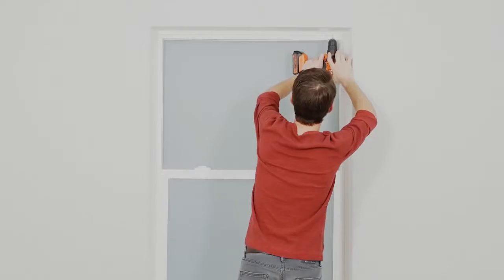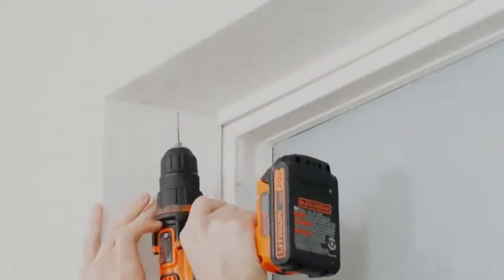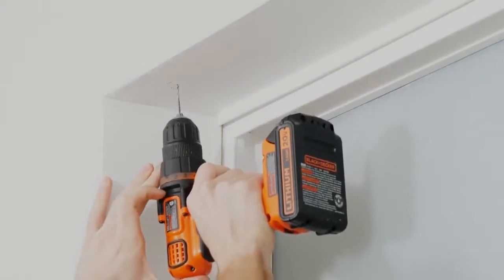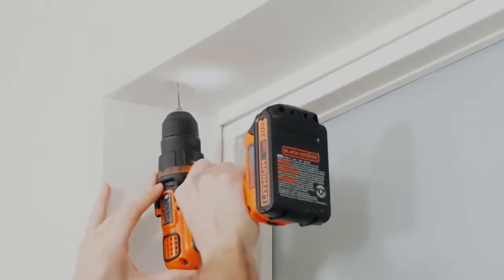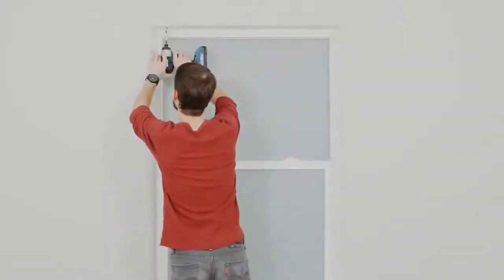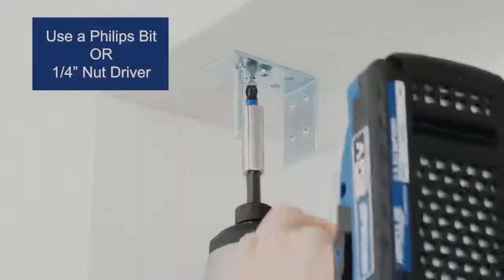To make drilling the screws in easier, I always recommend drilling pilot holes first. Don't go too deep though, just enough to get the screw started. Now, go ahead and drill the screws into place through each bracket.